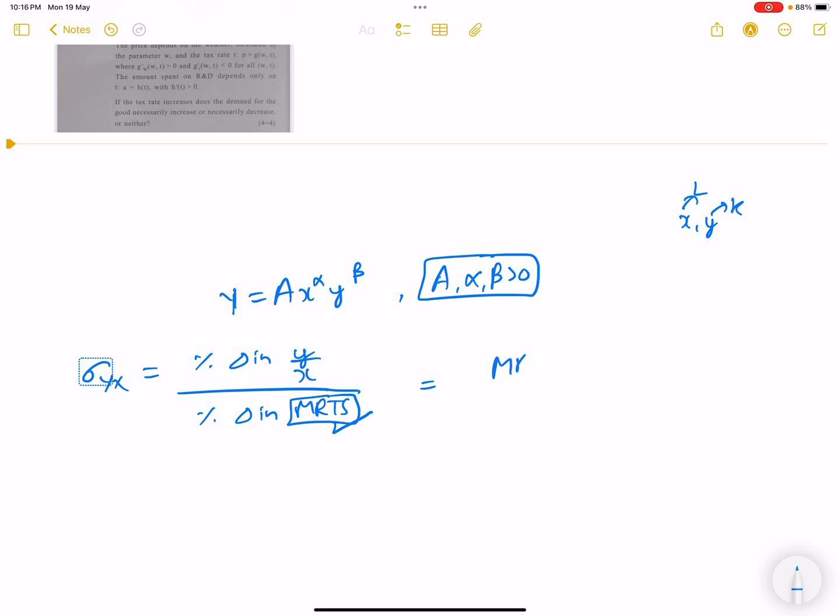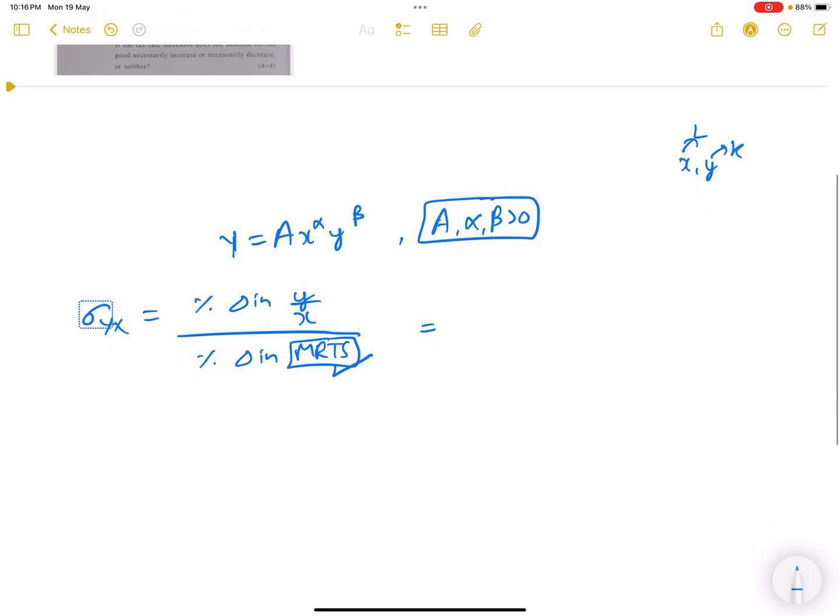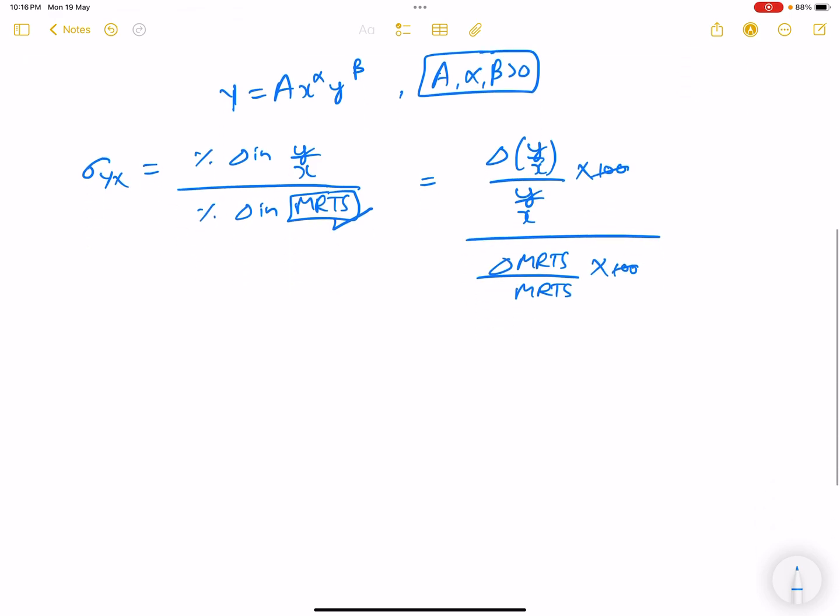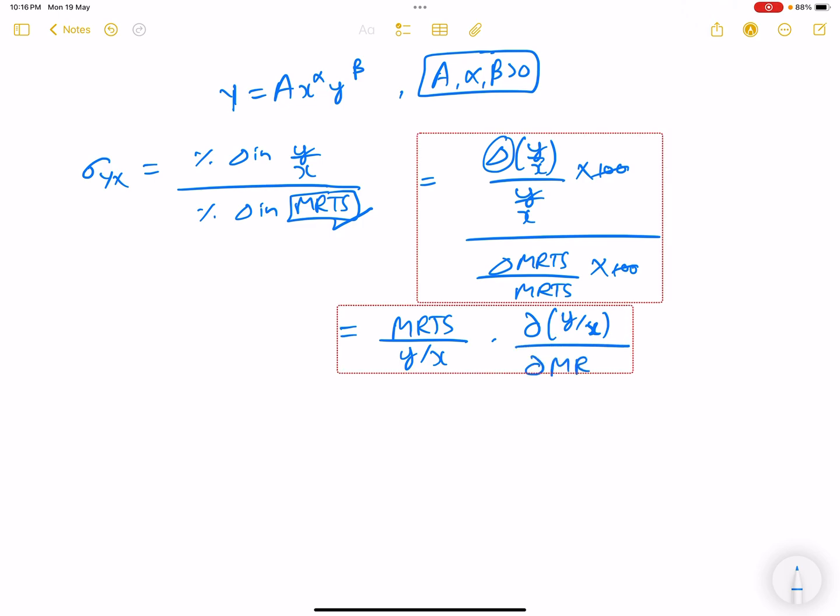But this gives you my value. A more basic way I will tell you. So the value becomes: change in y by x upon y by x times 100, change in MRTS upon MRTS times 100. So this can also be written as MRTS upon y by x, into this change, which is nothing but del y by x upon del MRTS.